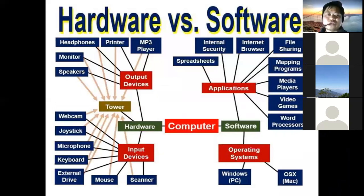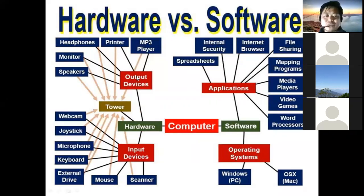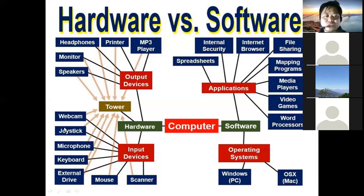What is the difference? Now, the components — a number of hardware items. These include: headphone, printer, MP3 player, monitor, speakers — these are output devices. Webcam, joystick, microphone — these are input devices. Scanner is also part of the hardware.